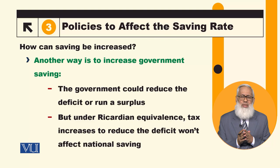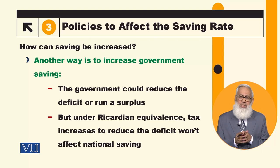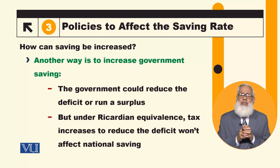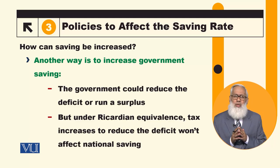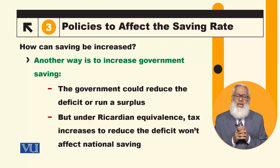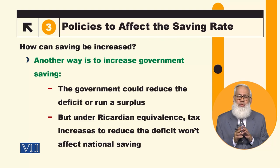So, government expenditures will increase the cost to the government, and taxes will also increase costs. We have discussed this in the context of the Ricardian equivalence concept.